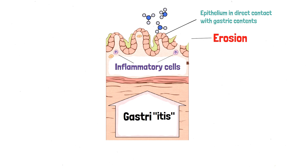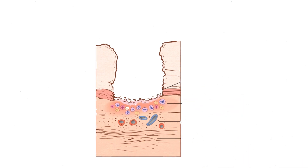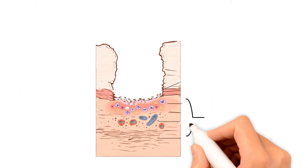If the epithelial cells are damaged, whatever substances are in the stomach come into direct contact with the layer beneath — the lamina propria. The lamina propria is a supportive connective tissue that underlies the surface epithelial cells, and connective tissues have blood vessels. Because of this, hemorrhage can occur at this stage. This condition is called acute hemorrhagic erosive gastropathy. Rather than staying in the mucosa, the damage can penetrate further into the submucosa, and that is when ulcers occur.